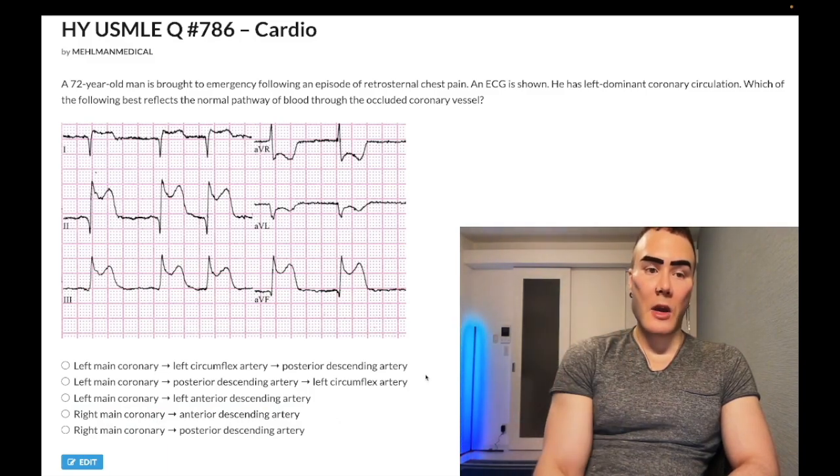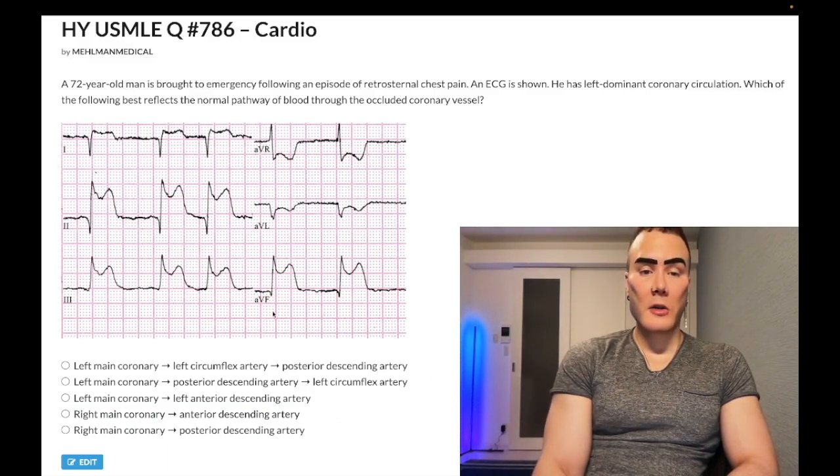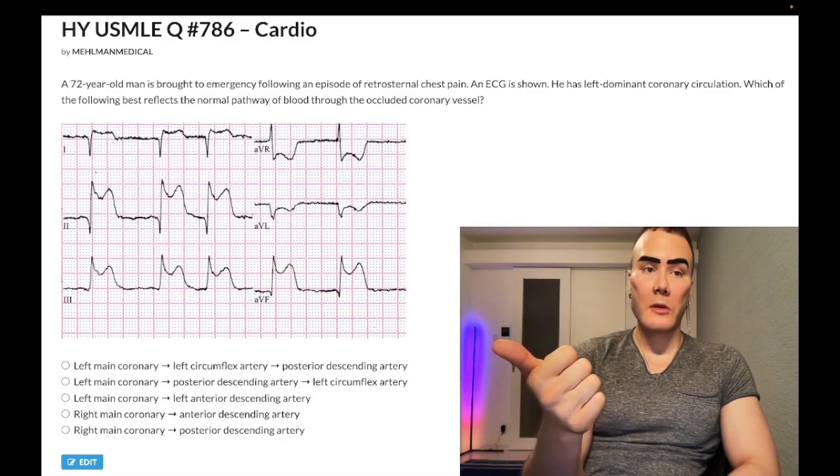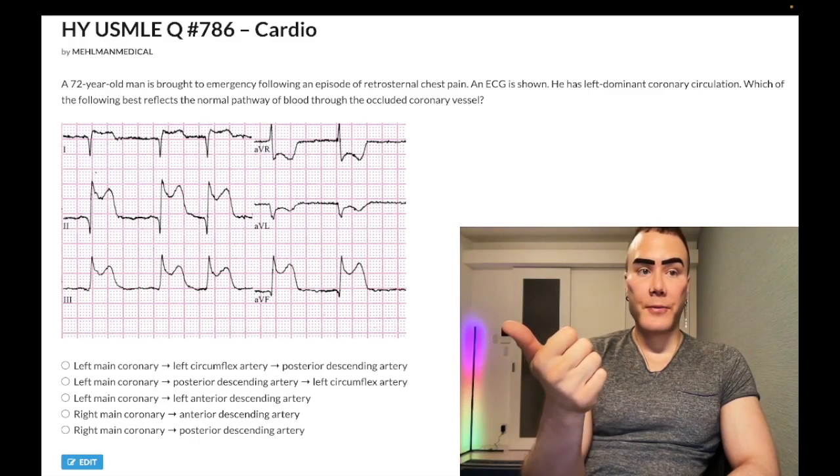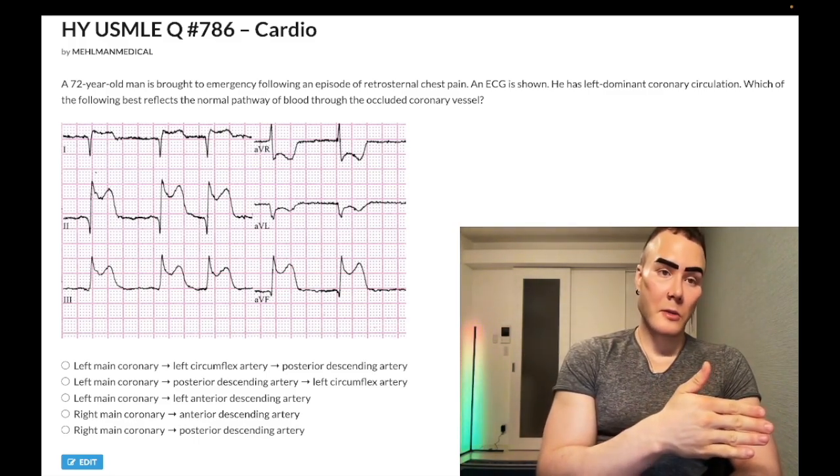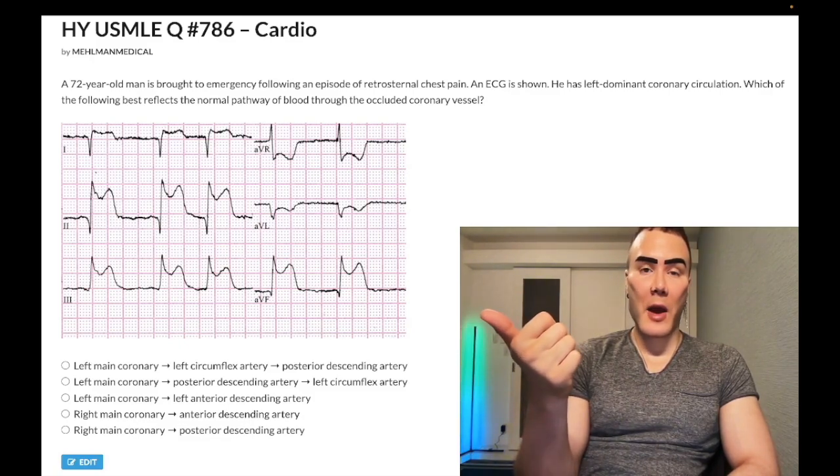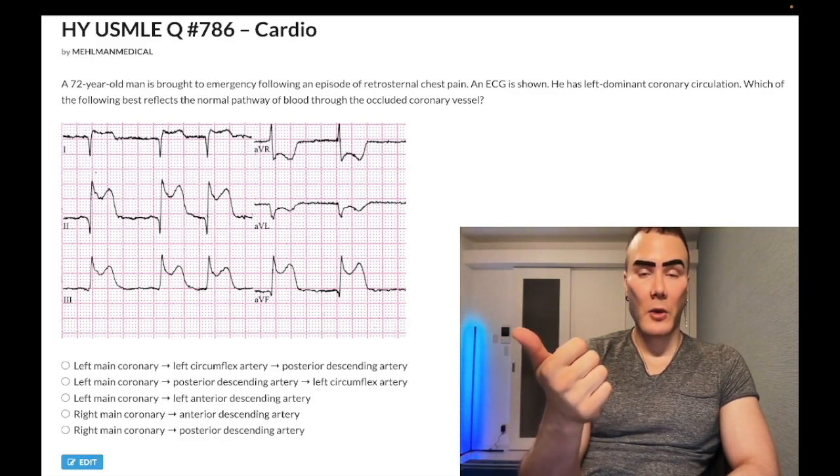The next step is saying, if we have an inferior infarct, which vessel would be occluded? The answer is going to be the posterior descending artery because it's the PDA, not patent ductus arteriosus, posterior descending artery that is going to supply the diaphragmatic slash inferior surface of the heart. You need to know that.